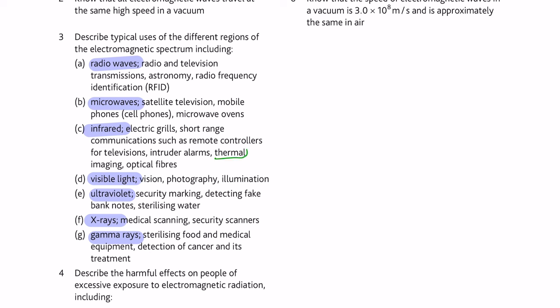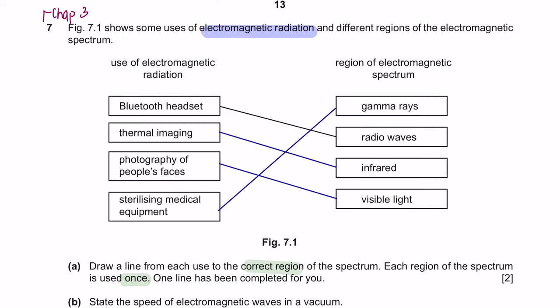For the second option, you have thermal imaging and thermal imaging is under infrared. Next, you have got photography. Photography is under visible lights. And finally, for sterilizing medical equipment, this is under gamma rays. Just match them accordingly.